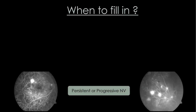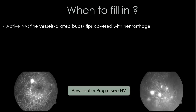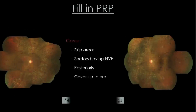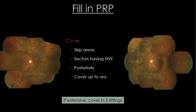Fill-in PRP is indicated when there is persistent or progressive neovascularization even after completing three sessions of PRP. Signs include active tufts of neovessels that have not regressed, newer areas of neovascularization, fresh vitreous hemorrhage, and areas with large gaps between laser spots. Laser marks may be deficient anteriorly or posteriorly. When doing fill-in PRP, cover the skip areas and areas with new NVEs, going as close to the arcades as possible posteriorly and up to the ora anteriorly. If extensive, it can be done in two sittings.